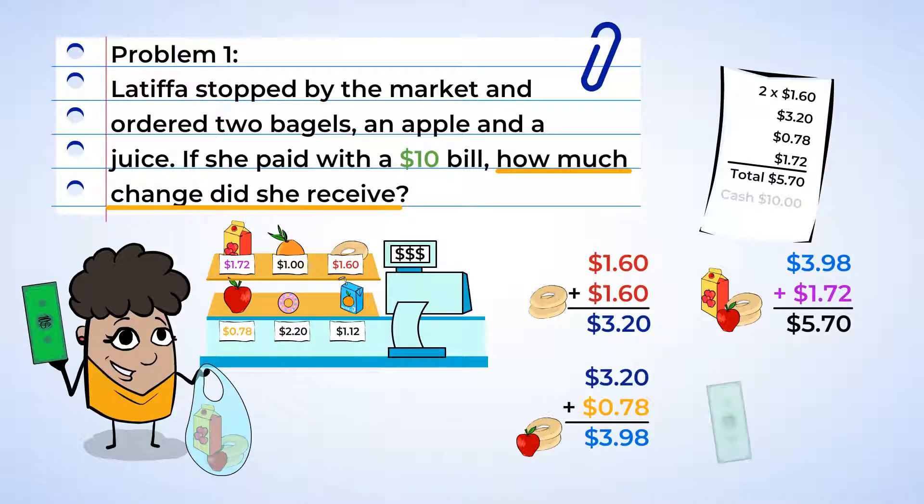Since Latifah paid with a $10 bill, we need to subtract $5.70 from $10. And it looks like we're going to need to borrow. $10 becomes a $9, and that gives us $0.100 to subtract $0.70 from. And that leaves us with $0.30. Now, moving on to the dollars. $9 minus $5 is $4. So, Latifah will get $4.30 back in change.